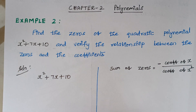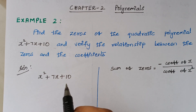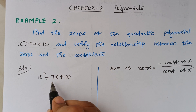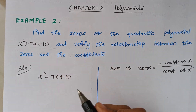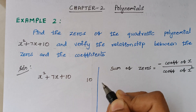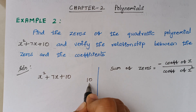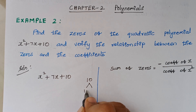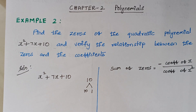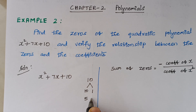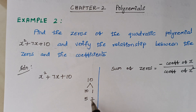We have to find two numbers such that if we multiply the two numbers we should get 10, and if we add the two numbers we should get 7. First, let us consider all the possible factors of 10. When you consider 10, you can take 10 × 1 = 10, and again 5 × 2 = 10. These are all the possible combinations to make 10.